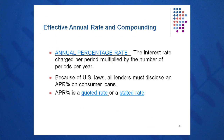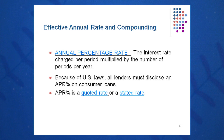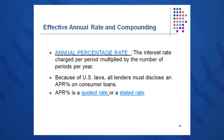APR is the interest rate charged per period multiplied by the number of periods per year. U.S. banking law requires all lenders to disclose the APR. APR is the quoted or stated rate, and if you see the words 'compounded monthly,' 'compounded daily,' or 'compounded quarterly' alongside that APR, you know you must calculate the EAR first.